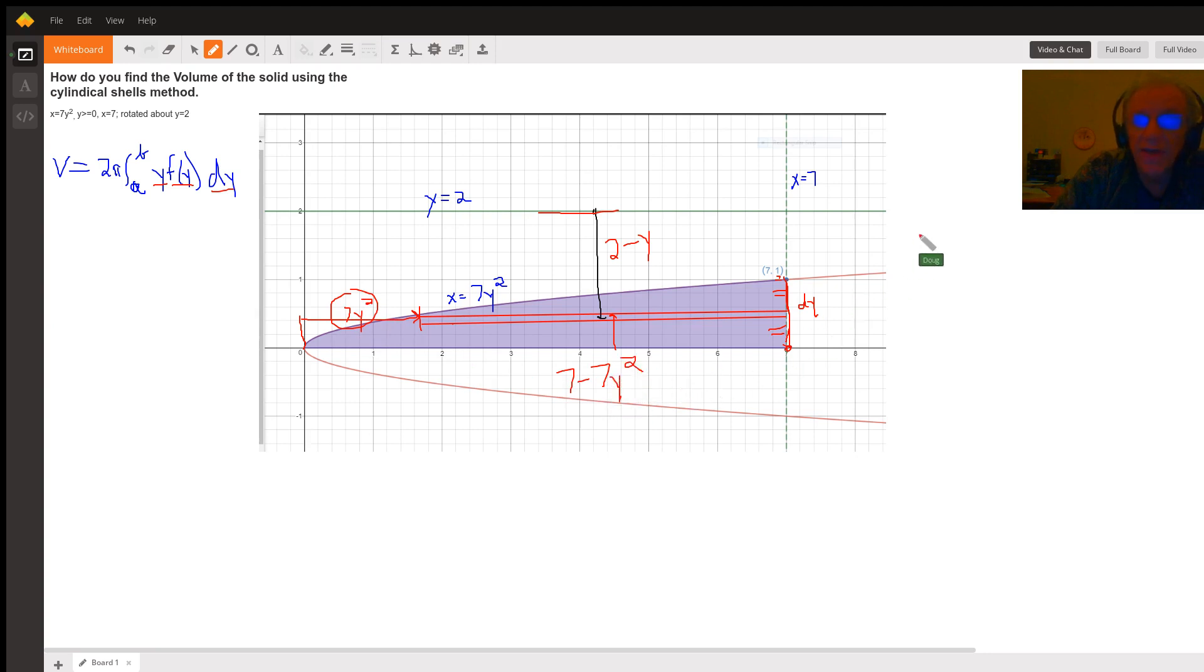And now we're ready to set up the definite integral. It's going to look something like this: 2 pi, the limits of integration along the y axis are from 0 to 1, the average radius is 2 minus y, the height of a typical shell is 7 minus 7y squared, and you can think of the thickness of the shell as represented by dy. So evaluating that integral will give you the volume of the solid of revolution.